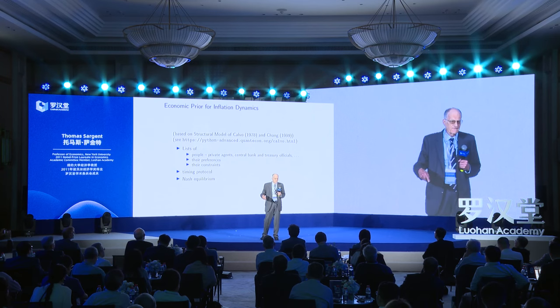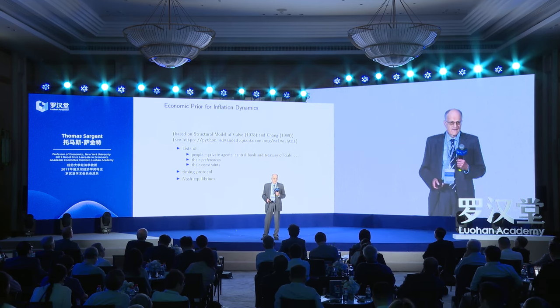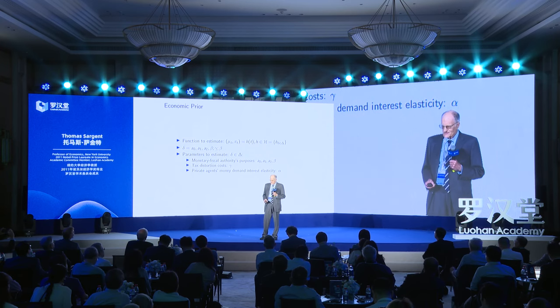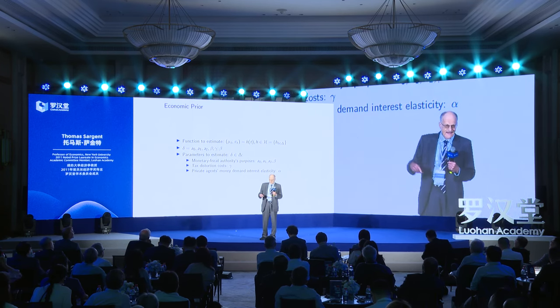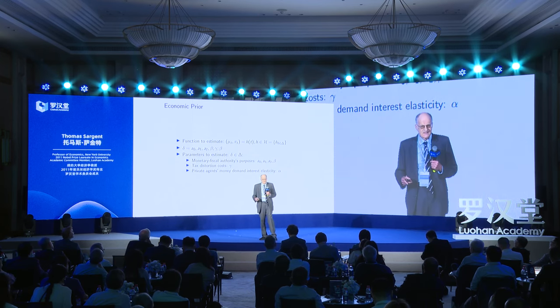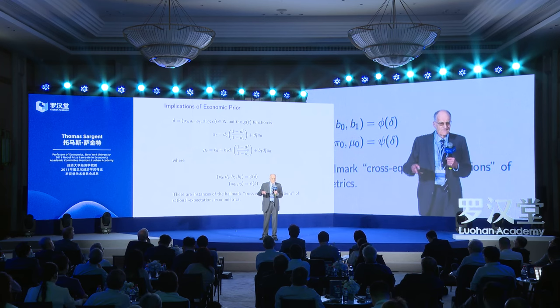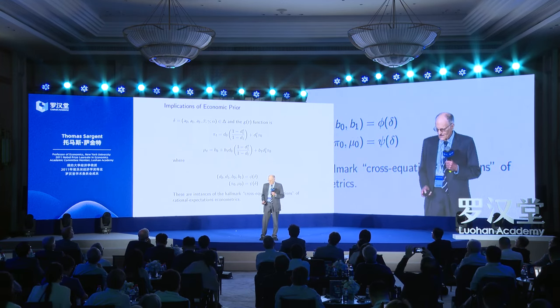What they want is to do what von Neumann said. We're going to have an economic prior for inflation. The people are going to be the private agents who are holding money, central banks, and treasury officials. We've got to say what their preferences and constraints are. We're going to have a timing protocol — who chooses what, when: central bank, treasury — and we're going to have a Nash equilibrium. Our function to estimate will have a list of parameters describing the monetary-fiscal authority purposes, tax distortions, and private agents' demands for money. When you do that, the parameters of the statistical descriptive model are themselves functions of the parameters of the deeper model. That's the whole point.